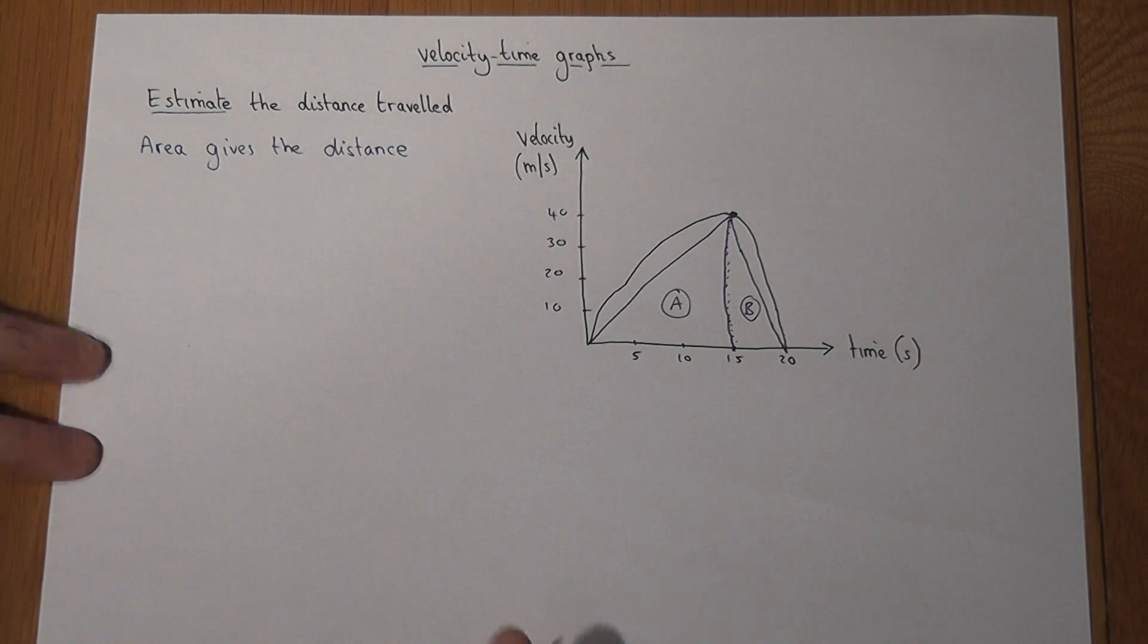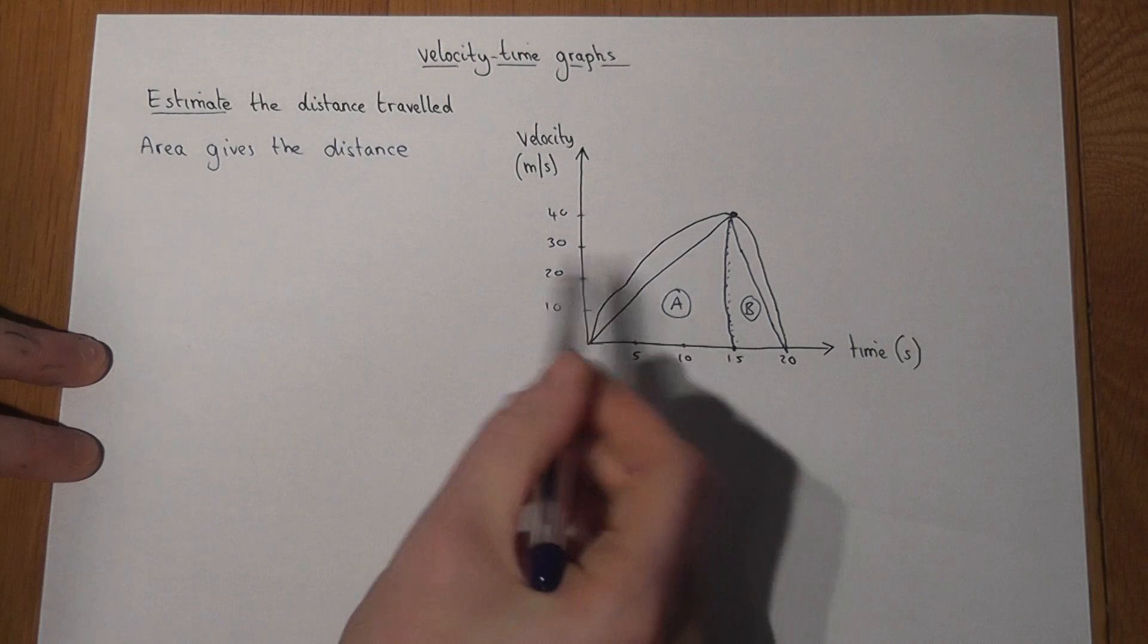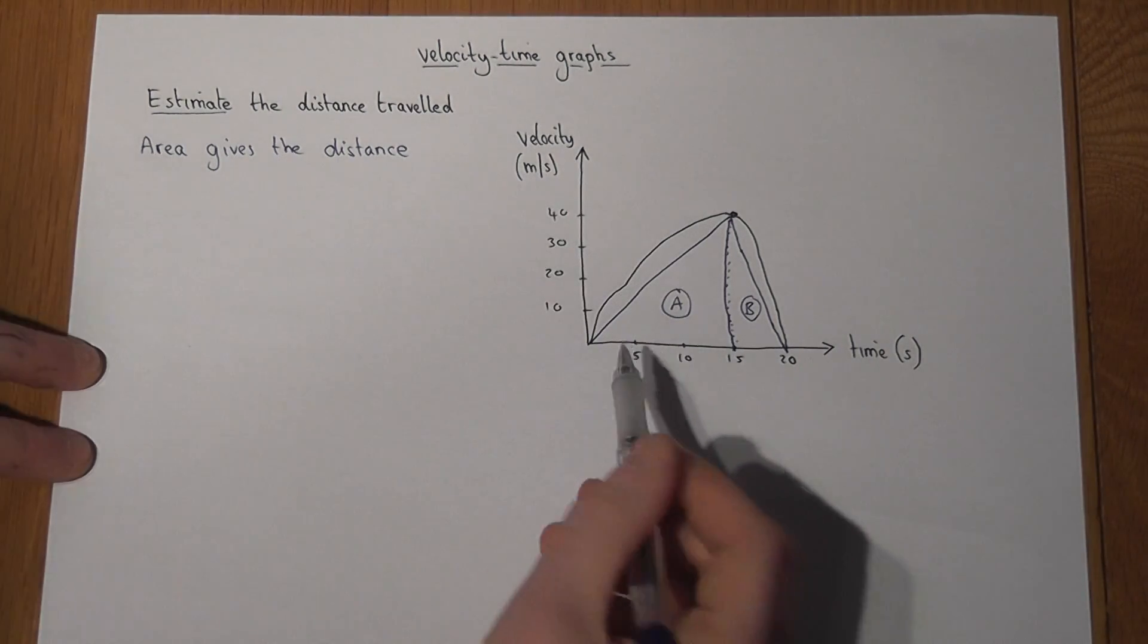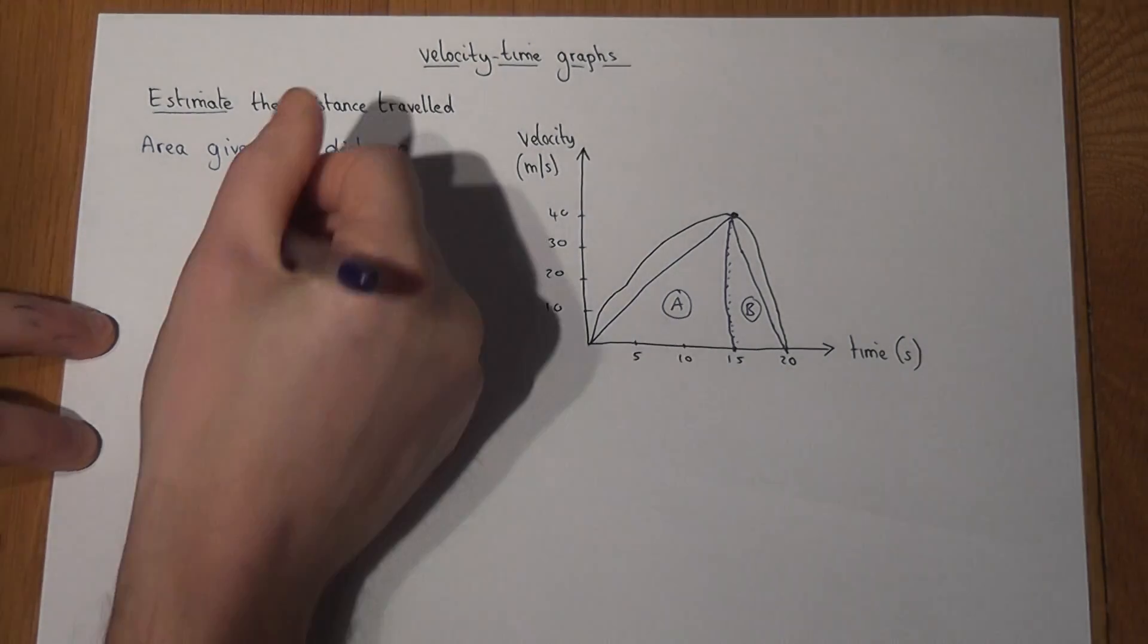Clearly it's only an estimate. The area I find is a bit too low, but we're showing that we understand that area shows us distance. So let's look at triangle A first of all.